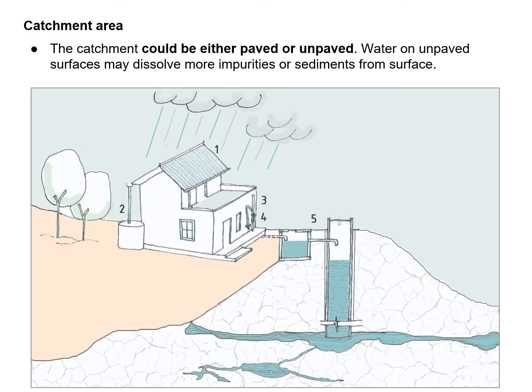Catchment area could be either paved — such as roofs — or unpaved. Water on unpaved surfaces may dissolve more impurities or sediments from the surface. Paved area catchments include roofs, driveways, parking areas, courtyards, and roads. These are smooth, clean surfaces and impervious to seepage, so they collect a greater quantity and better quality of water.